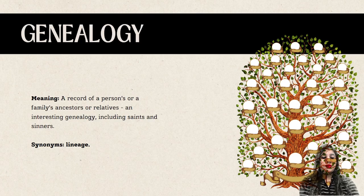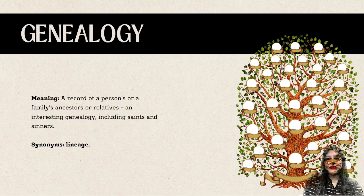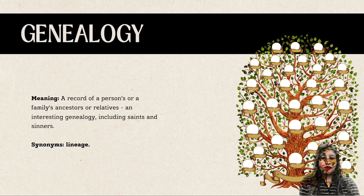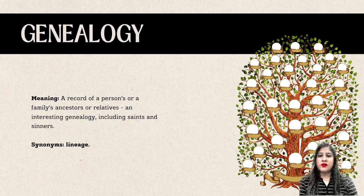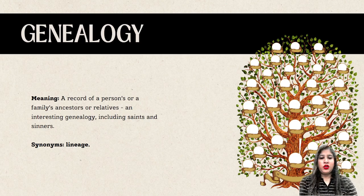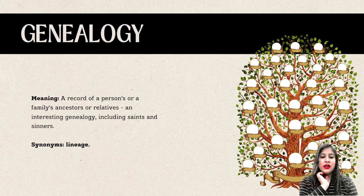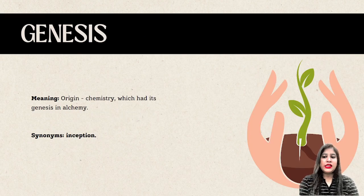Next we have 'genealogy'. Genealogy is a record of a person's or a family's ancestors or relatives — like a family tree. Example: 'An interesting genealogy including saints and sinners.' The synonym would be lineage.